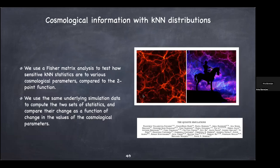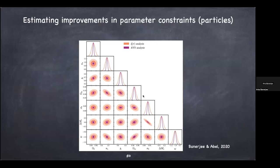In our first paper, we showed that given the same halo positions from simulations, the nearest-neighbor distributions yield much narrower error bars on cosmological parameters compared to the two-point correlation function. The lighter colored curves show the Fisher error bars for the two-point correlation; the darker curves show the nearest-neighbor analysis. Whenever you use nearest-neighbor distributions, you get much narrower error bars on the parameters of interest — for example, equation of state of dark energy and neutrino mass.